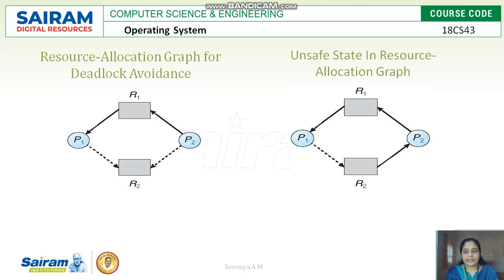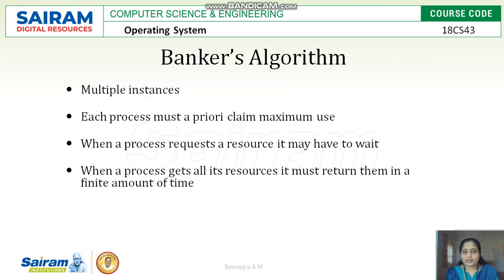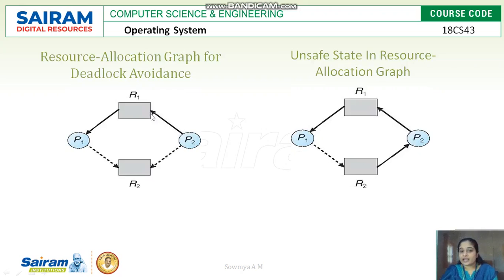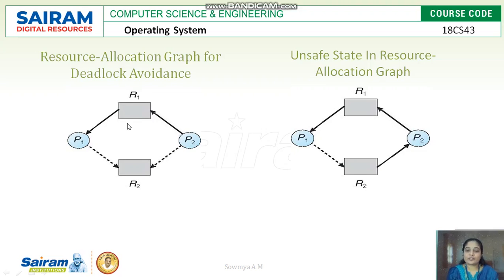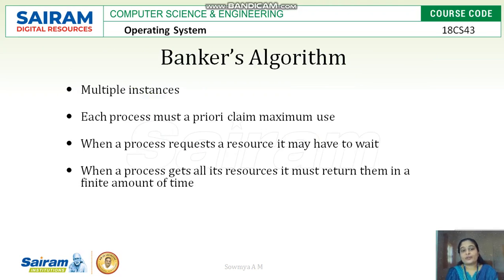Until P2 completes execution, P1 may not get R2, but P2 needs R1 to complete execution — that is an unsafe state. If P2 makes a claim edge request, the operating system decides which process to complete first and allocates the same resources to another process.